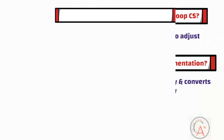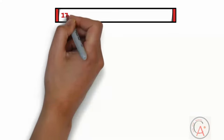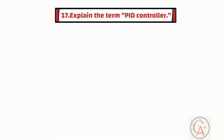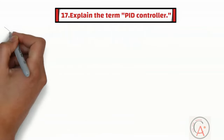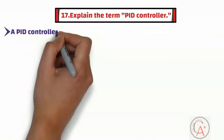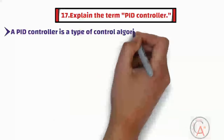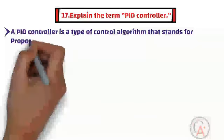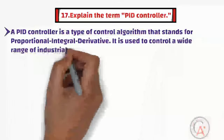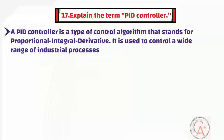The seventeenth question is: explain the term PID controller. A PID controller is a type of control algorithm that stands for Proportional Integral Derivative. It is used to control a wide range of industrial processes.